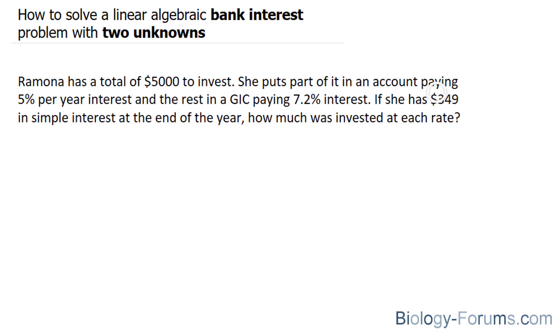So we're assuming that she made $349 by investing part of her money in a 5% account and part of her money in a 7.2% account. So let's label A as the money she placed in the 5% account and B as the money she placed in the 7.2% account.